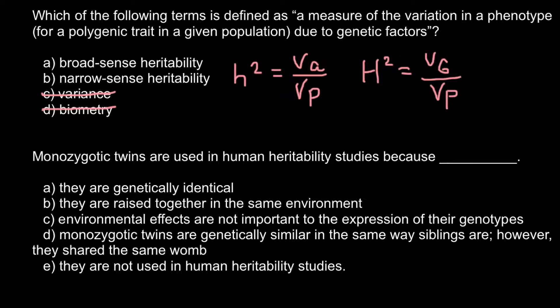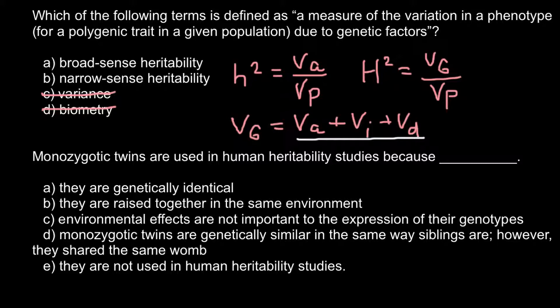If you are still confused about which answer to choose, here is a hint. The total genetic variance equals variance additive plus variance — we use I here because E stands for environment — so plus variance environmental, plus variance due to dominance. As you see, we call this broad sense heritability because it includes three different variances, and this we call narrow sense heritability.